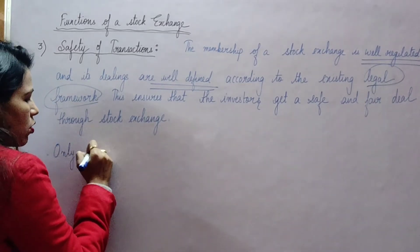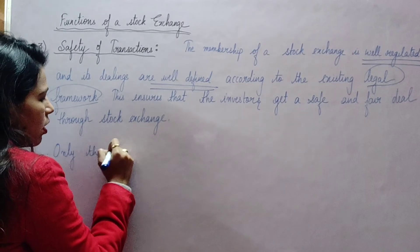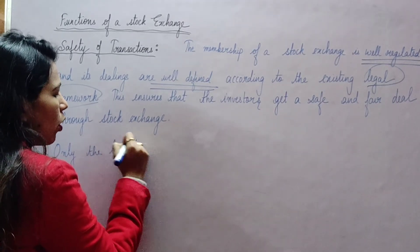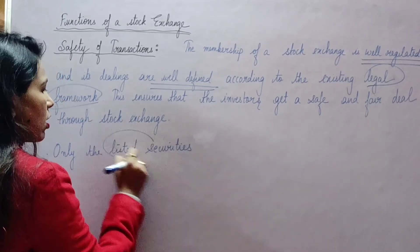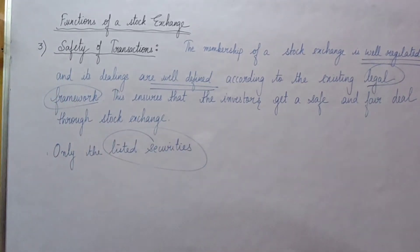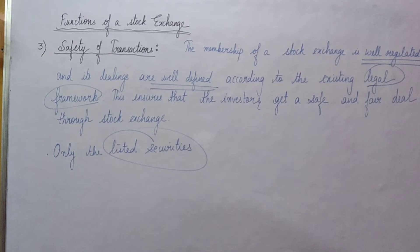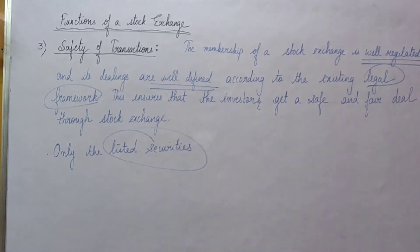Only listed securities are traded in a stock market. It is not that anyone can buy any securities here — only listed securities are dealt with in the stock exchange. A company's name is included in the stock exchange only after proper verification. You may recall from Class 11 in the formation of a company, the capital subscription stage — if a company wants to raise capital through shares or debentures, they must first get approval.